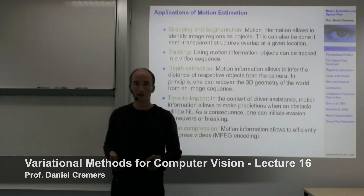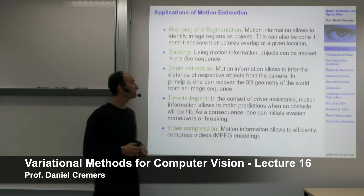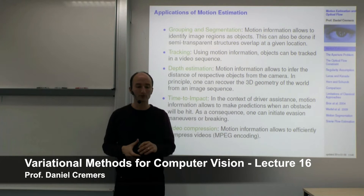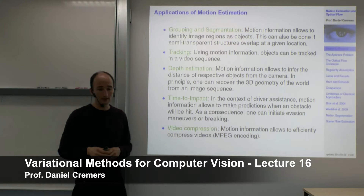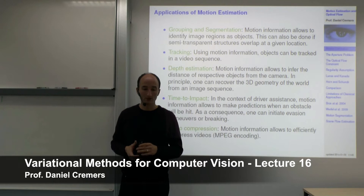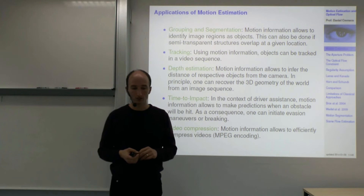Welcome to the next part on variational methods for computer vision. Last time we talked about optical flow and correspondence problems, and we'll continue here today. One key aspect of motion estimation is that you can use motion information to identify coherent objects in a scene.